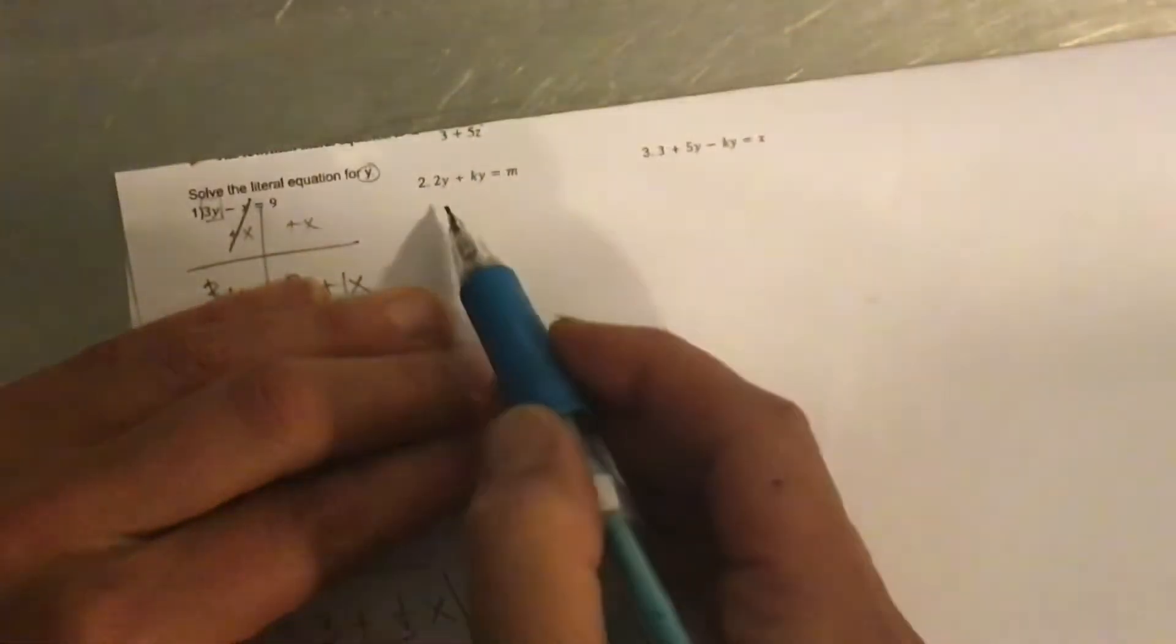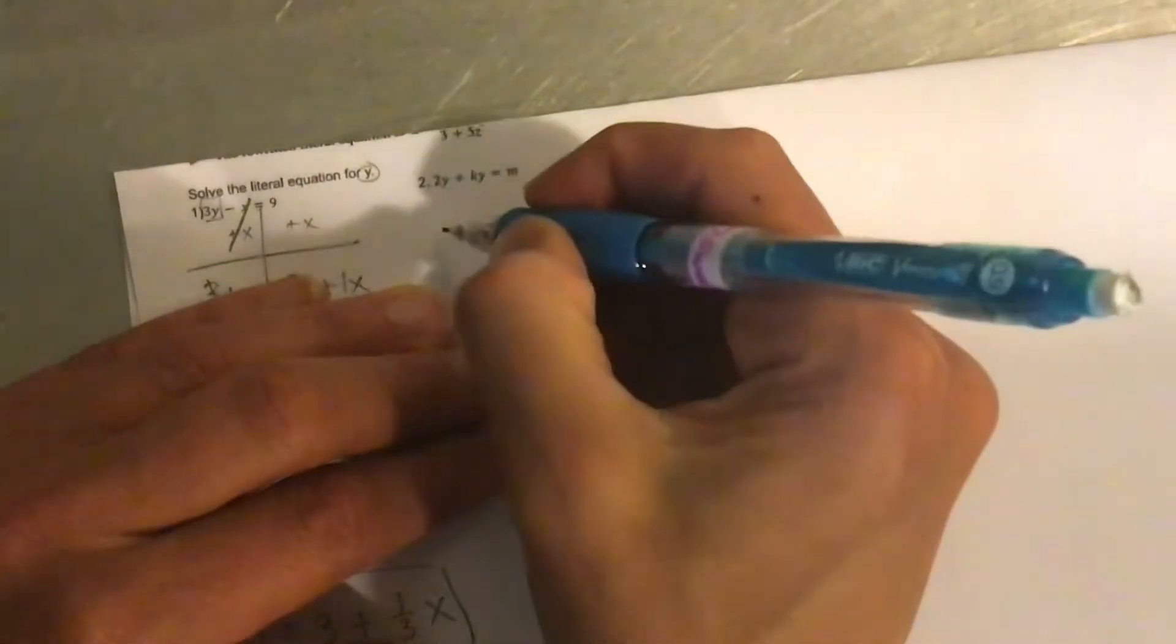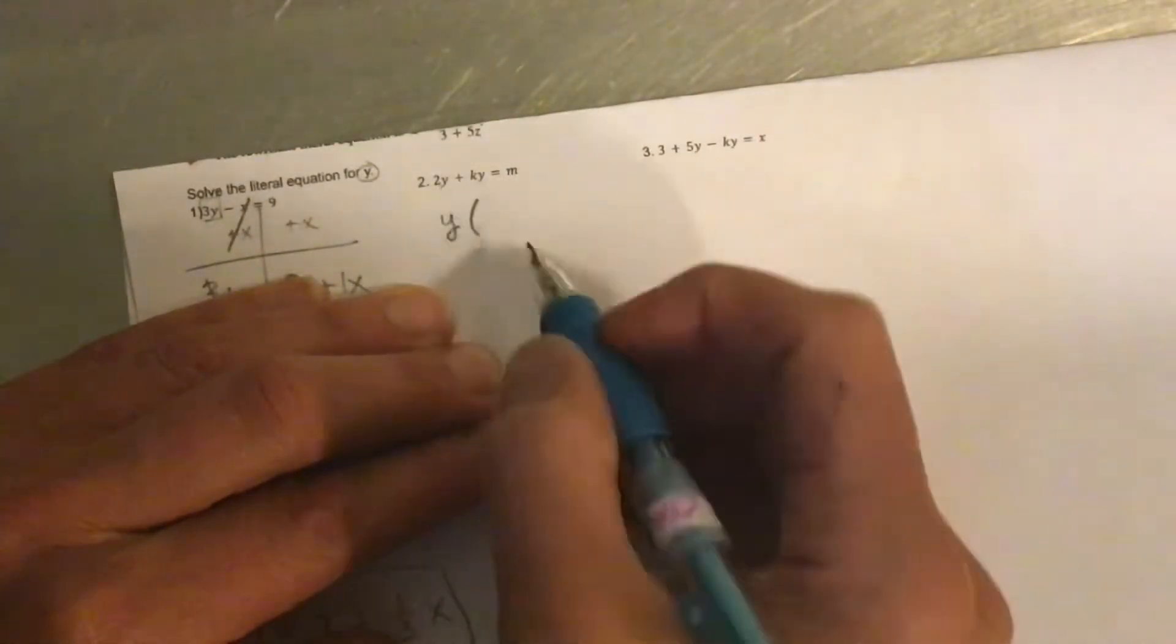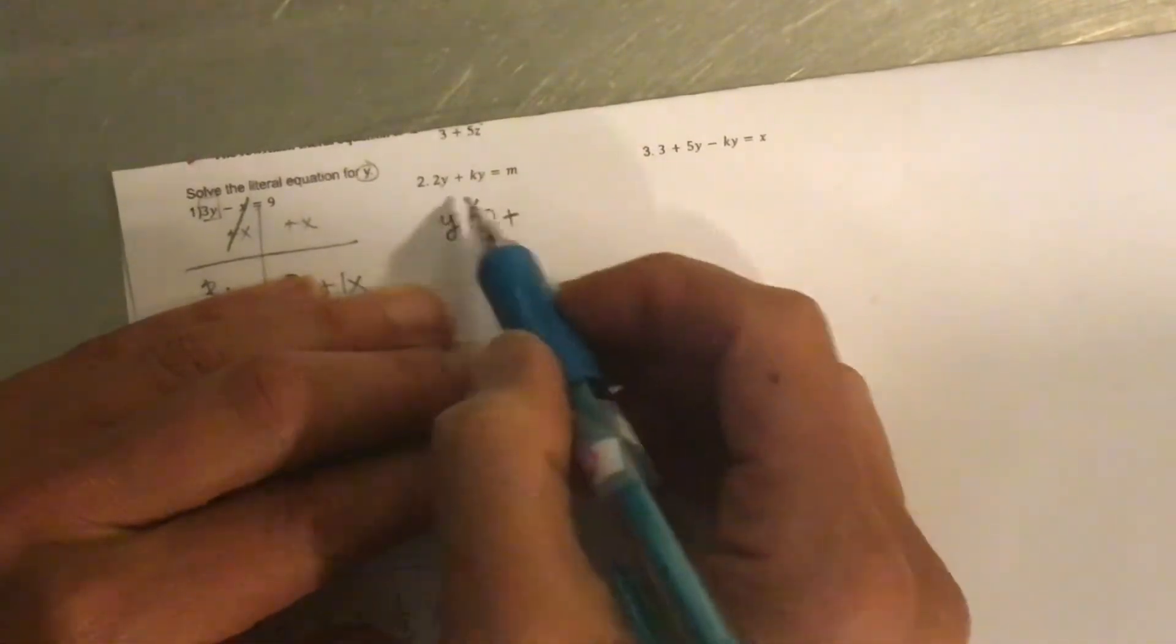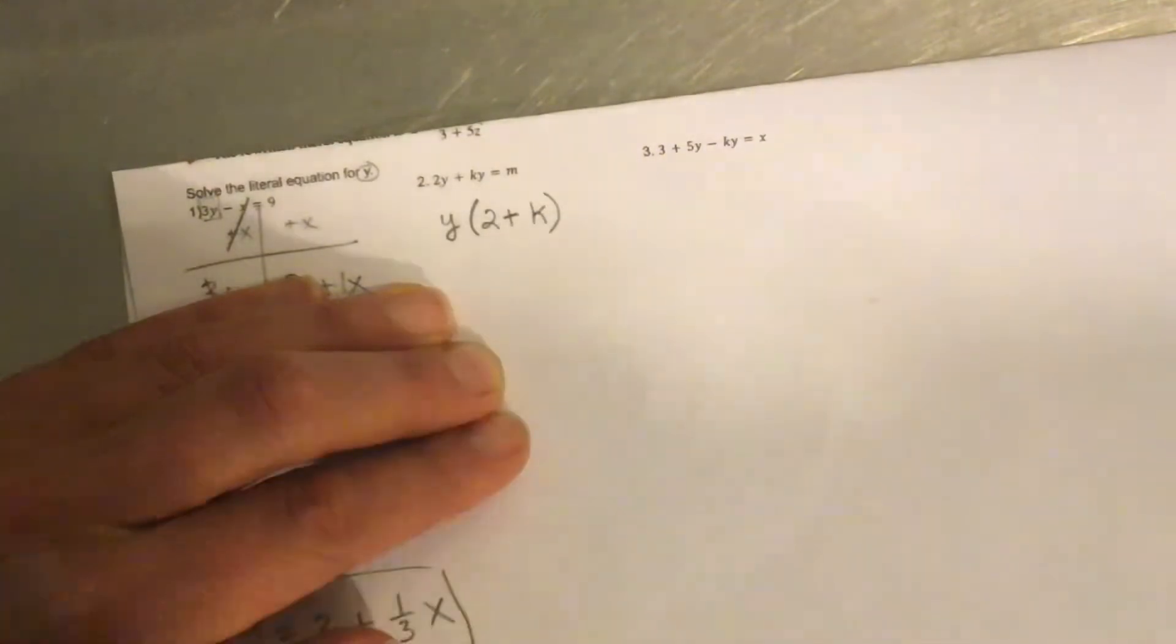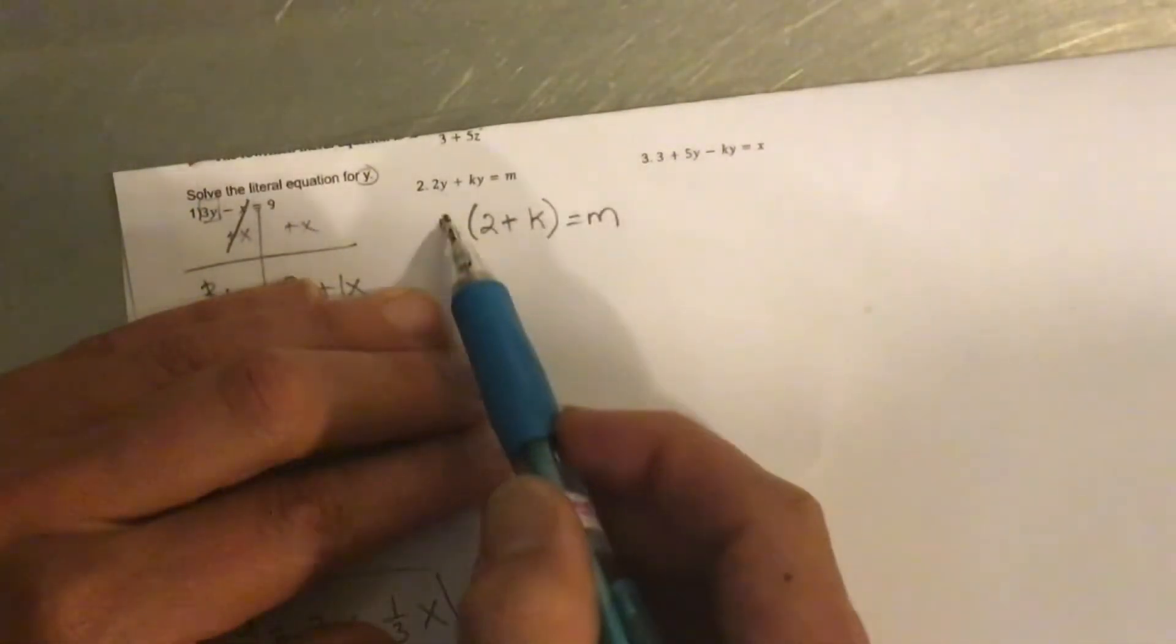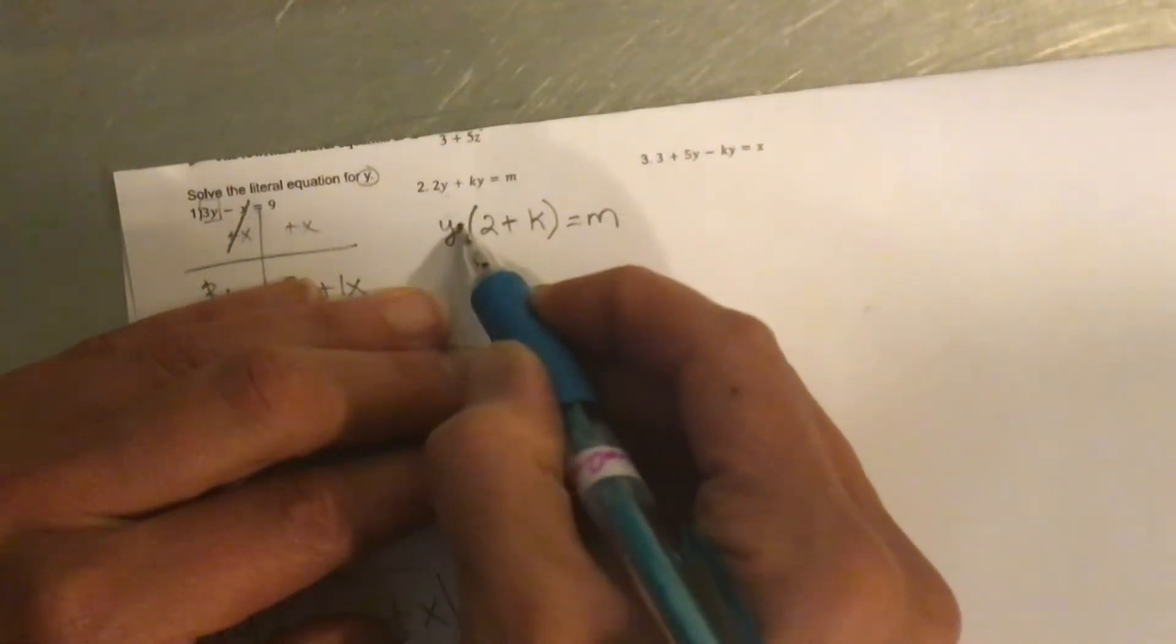All right. Solving for y again. So here I've got it in two different places. So remember, I have to do the distributive property. So I'm going to pull the y. And if I pull the y out of this first term, I've got a 2 left. Let's drop that plus sign. If I pull the y out of this one, I only have the k left. And that equals m. If you want to check your work, distribute it back in.